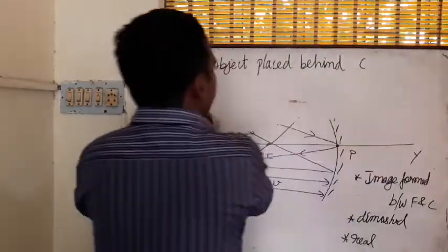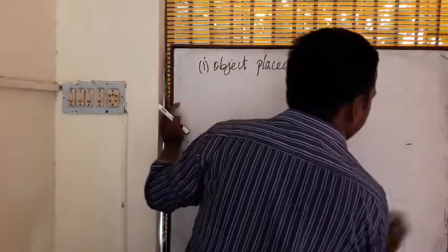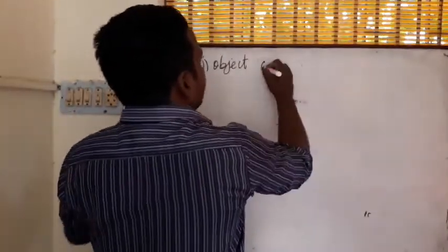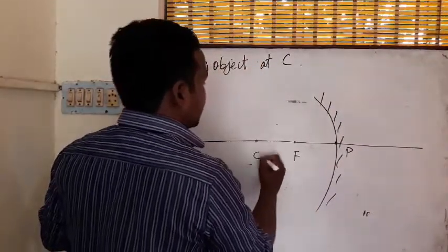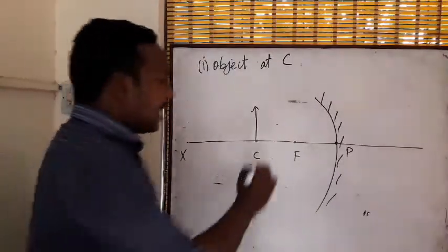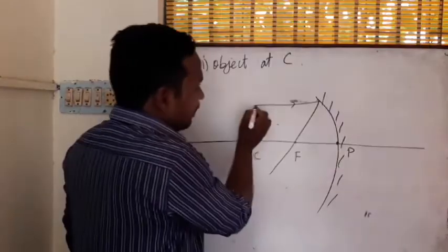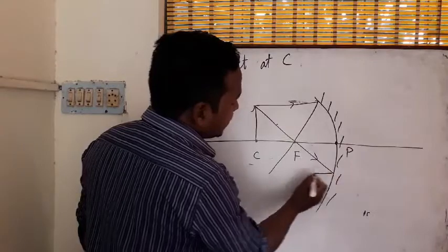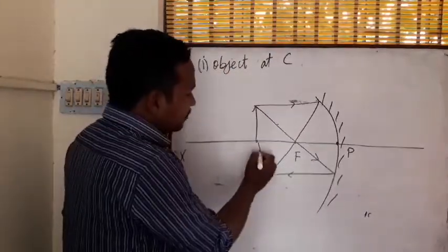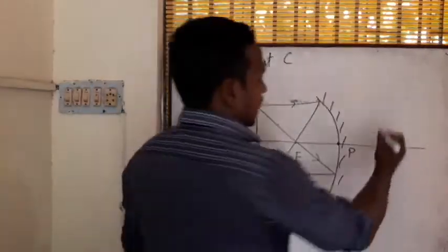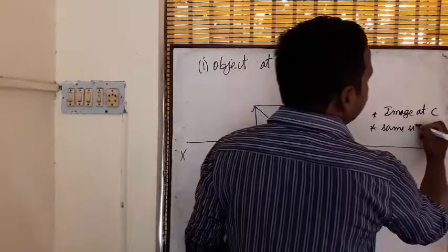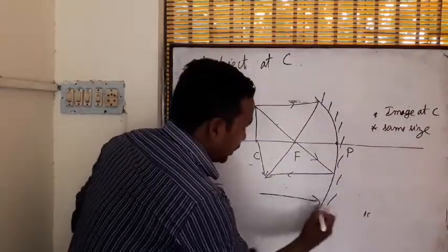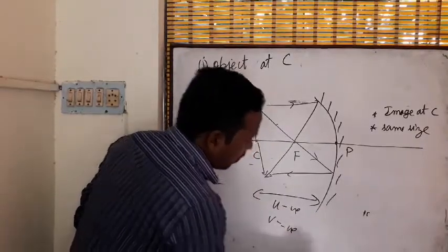Case 2: Object placed at C. Using the same concave mirror — pole P, principal focus F, center of curvature C — the object is placed at C. A parallel ray goes through F; the ray through F reflects parallel to the principal axis. The image is formed exactly at C. The image is the same size as the object. Both u and v are negative and equal to each other. It is a real, inverted image.